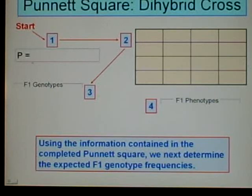So we finished step 1, we got the parent genotypes for the cross. We finished step 2, we filled out the Punnett square. Now we move on to step 3. Using the information contained in the completed Punnett square, we next determine the expected F1 genotype frequencies.